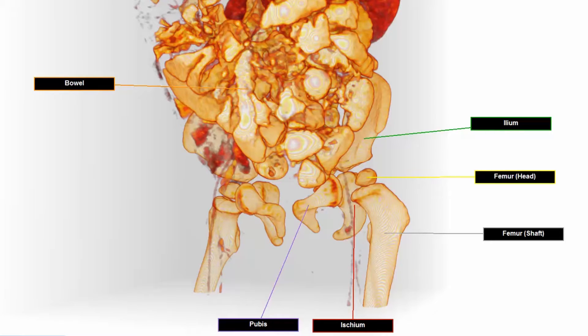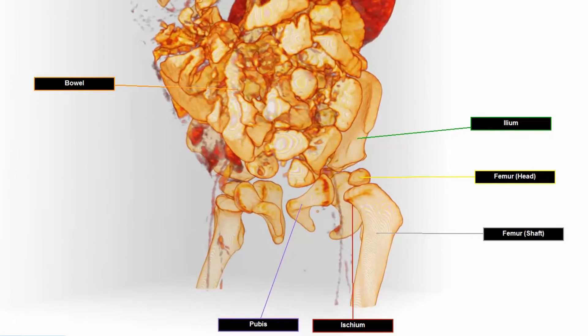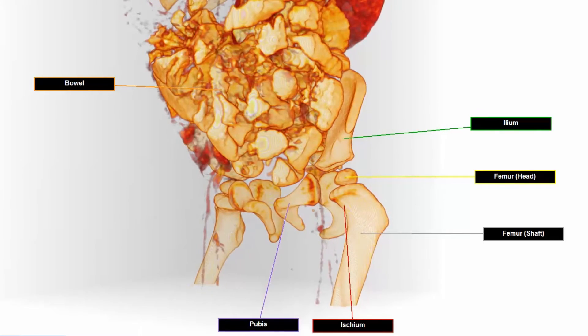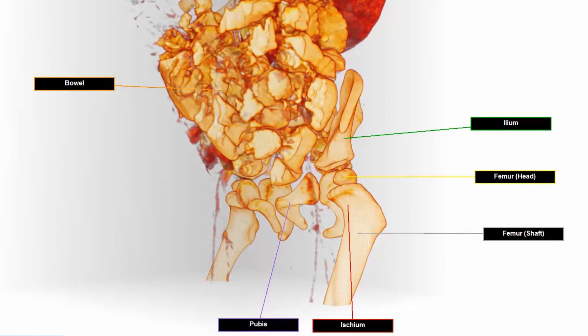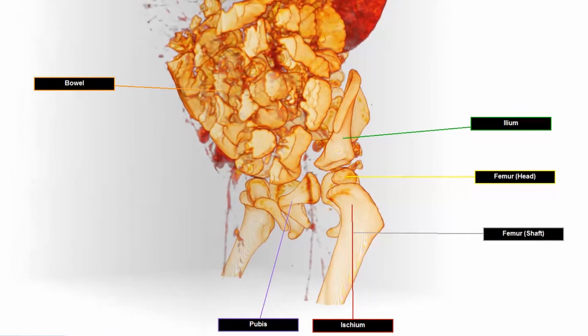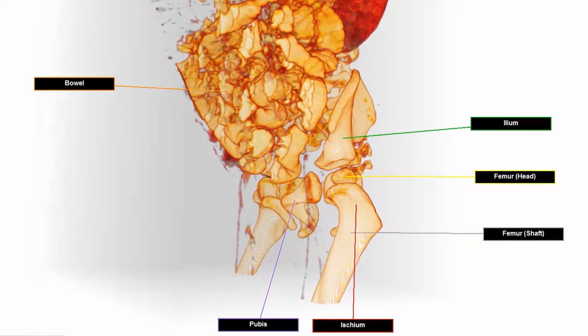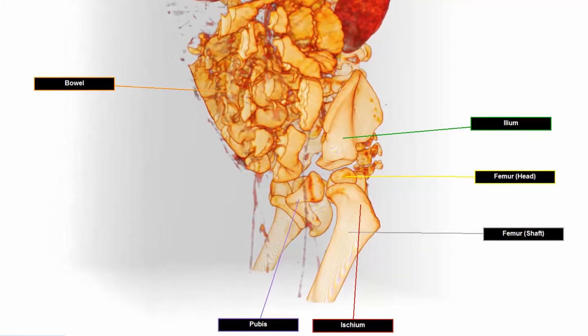I'm going to pan around the volume again, where we can see that the sacral vertebrae and the head of the femur have also not been completely ossified, or turned to bone.